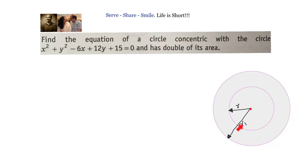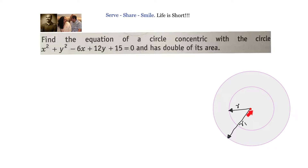This is the circle given to us whose equation is x squared plus y squared minus 6x plus 12y plus 15. The circle we require is concentric with this circle, meaning both have the same center. So if we identify the center of this circle, our new circle will also have the same center.